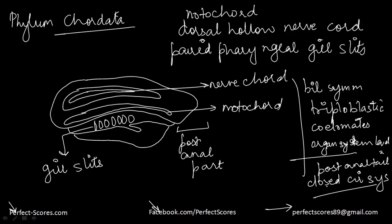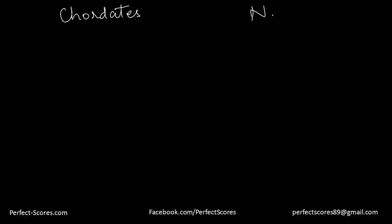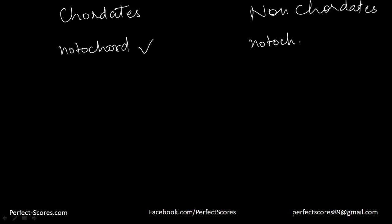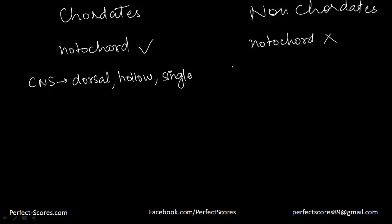Now let's do a basic differentiation and comparison of chordates and nonchordates. The first basic difference is that the notochord is present in chordates and absent in nonchordates. Second, the central nervous system in chordates is dorsal, hollow, and single. In nonchordates the central nervous system is ventral, double, and solid — not hollow.